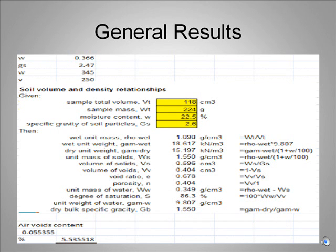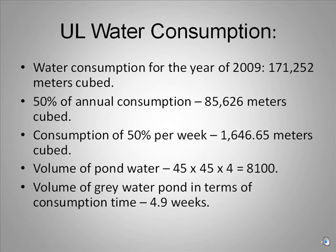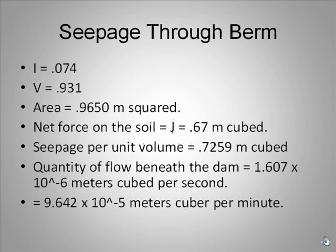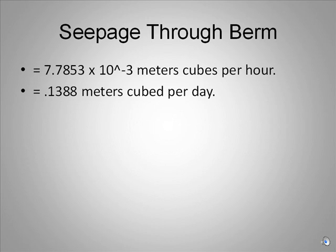The construction material for the berm is to be the clay located on site. The clay is to be compacted at every 200 millimetres using a sheep's foot roller. In the year 2009, the UL water consumption was 171,252 metres cubed. The grey water pond designed is allocated for 50% of this water needed — 85,626 metres cubed of water per year, which is 1,646.65 metres cubed per week. The volume of the grey water pond is 8,100 metres cubed, which means it can hold up to 4 weeks of water for the UL campus. We calculated that on average, 1.4 metres cubed of water travels through and under the berm on a daily basis. This is very little seepage, which proves to be a very positive characteristic of the clay provided.